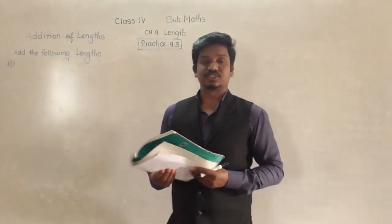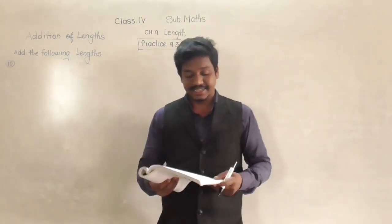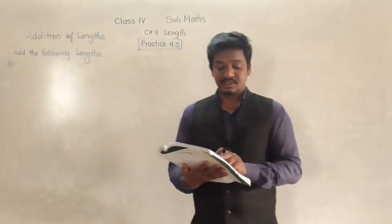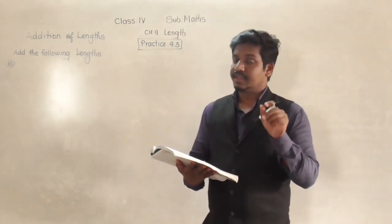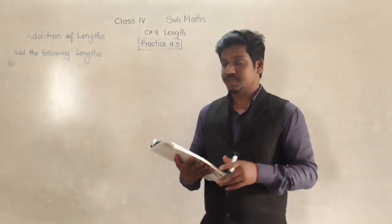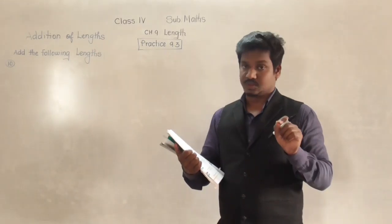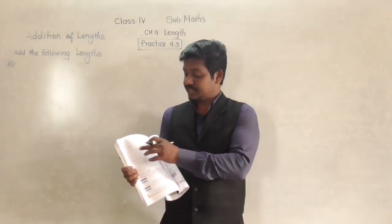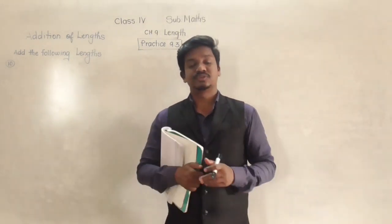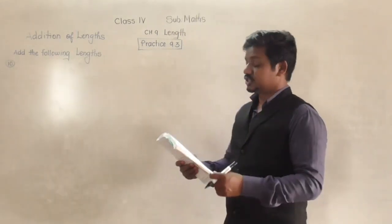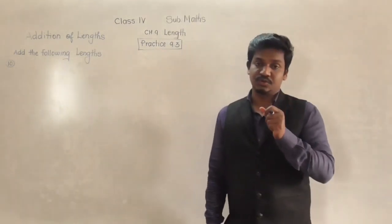Add the following lengths. In question number 10, open your page number 128, practice 9.3. We have 60 meter 25 centimeter and 23 meter 95 centimeter. So here two lengths are given in meter and centimeter — their units are the same. From question number 10 onwards, you have to write in the notebook, since the textbook columns are only provided up to question 9. Now in question number 10, two lengths are there: 60 meter 25 centimeter and 23 meter 95 centimeter. First what we have to do — we have to write the units.